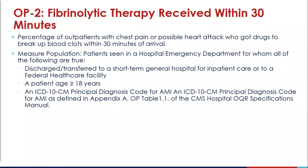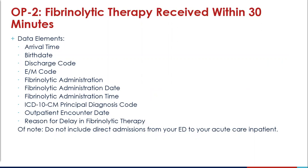The first measure we will discuss is OP2, which looks at fibrinolytic therapy received within 30 minutes of arrival. This measure looks at the percentage of outpatient patients with chest pain or possible heart attacks who got drugs to break up blood clots within 30 minutes of arrival. Evidence suggests that time to fibrinolytic therapy is a strong predictor of outcome in patients with acute myocardial infarction — nearly two lives per 1,000 patients are lost per hour of delay. National guidelines recommend fibrinolytic therapy within 30 minutes of hospital arrival for patients with STEMI. This slide also shows the measure population, which helps identify who should be included in this data. Please note that this measure does not include direct admissions from your ED to your acute care inpatient areas.